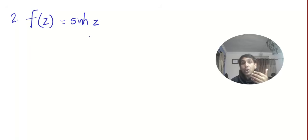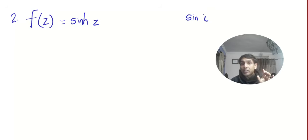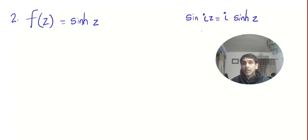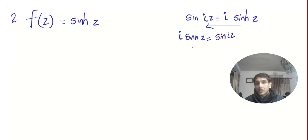I will write the connection between the trigonometric and hyperbolic functions. We have sin(iz) = i·sinh(z). Reading from right to left: i·sinh(z) = sin(iz), so sinh(z) = (1/i)·sin(iz). Now write u + iv with the input x + iy. Recall from the revision that 1/i = −i. So u + iv = −i·sin(i(x + iy)) = −i·sin(ix + i²y) = −i·sin(ix − y), since i² = −1.